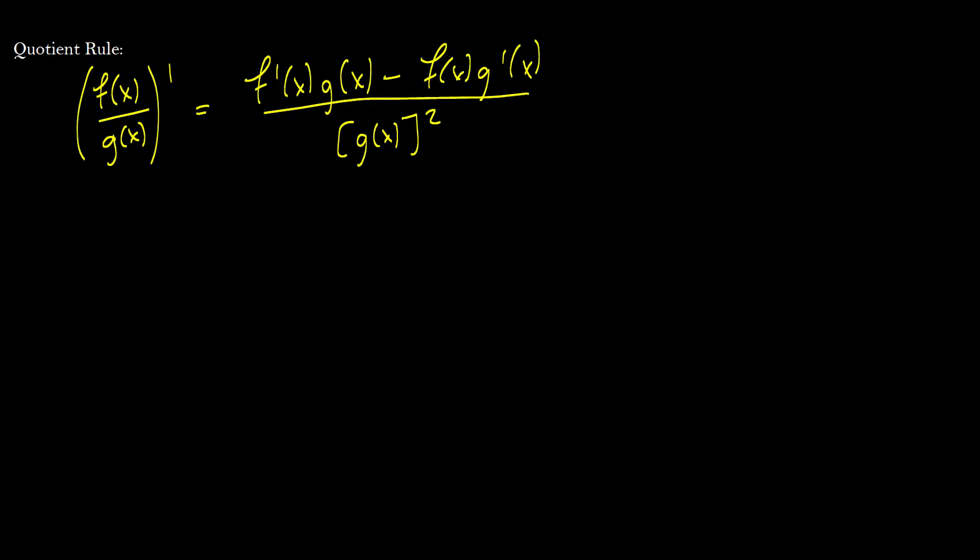Now, this is complicated to remember. So what I would recommend is writing a short form for it, which is f prime g minus f g prime all over g squared. These are the same thing. This is a little easier to remember. If you keep your order f and g, you just shift the prime over one, just like with the product rule, and then you divide by the bottom squared.